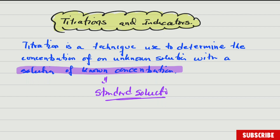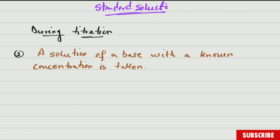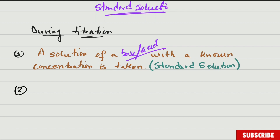What is going to happen during titration? Let's go through all the things that happen. The first thing that must be done is that a solution of a base with known concentration is taken. This solution is called a standard solution. Now, this standard solution doesn't need to be a base — it can also be an acid. It's a solution where you know exactly the concentration, regardless of whether it's an acid or a base.